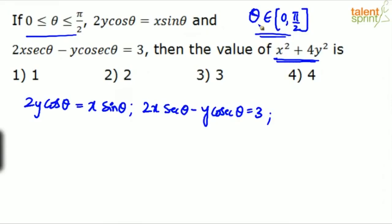Should we substitute 90? No — cos 90 is 0 and sin 90 is 1 in the first equation, but secant 90 is undefined. Can we take θ = 0? Again, cos 0 is 1 and sin 0 is 0, but cosecant 0 is undefined. So both 0 and 90 are ruled out. Let's try θ = 45.